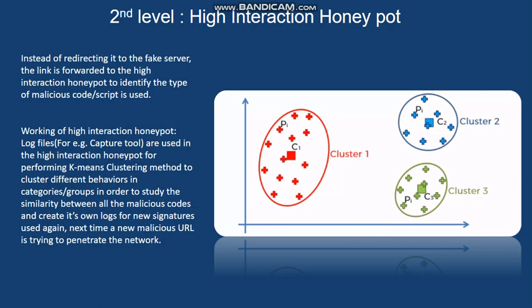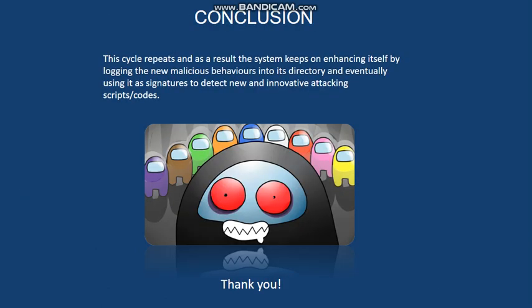The model creates its own logs with new signatures for the next time any URL tries to penetrate. This cycle repeats itself, so the system keeps enhancing by logging new malicious behaviors into its directory and eventually using them as signatures to detect new attacking scripts or codes. Thank you.